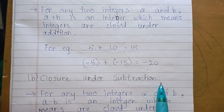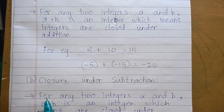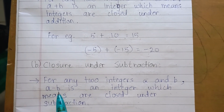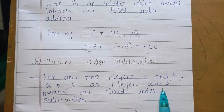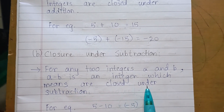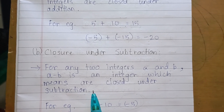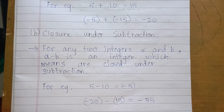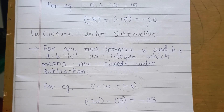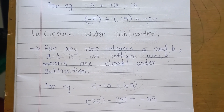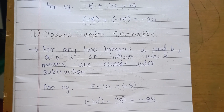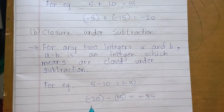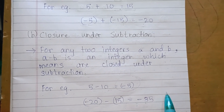Now, Closure Under Subtraction. Closure under subtraction means: for any two integers a and b, a minus b is an integer, which means integers are closed under subtraction. For example, 5 minus 10 equals minus 5 — all three are integers. Another example: minus 20 minus 15 equals minus 35 — all three are integers. So integers are closed under subtraction.